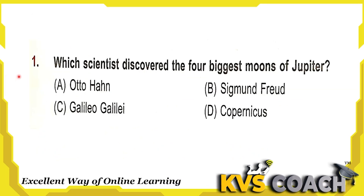First question: which scientist discovered the four biggest moons of Jupiter? Option A is Otto Hahn — he discovered nuclear fission. Option B is Sigmund Freud — he discovered the technique of psychoanalysis. Option C is Galileo — yes, Galileo discovered the four biggest moons of Jupiter. Option D is Copernicus — he proposed that planets orbit around the sun. So the right answer is Galileo.